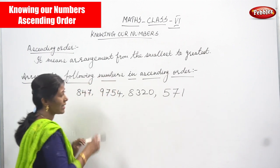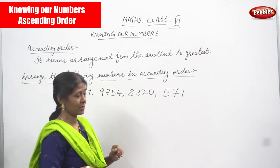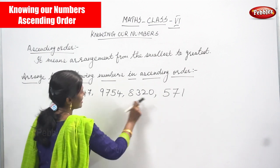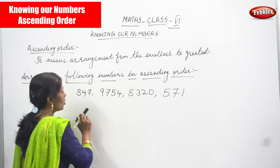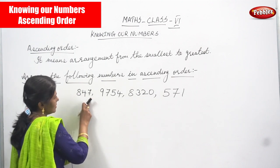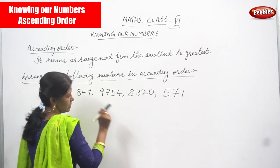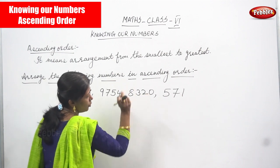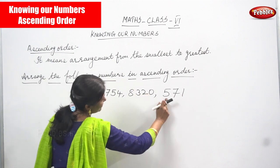We have to arrange the numbers from smallest to greatest. Before that, let's count the digits. The first number, 847, has 3 digits. The second number, 9754, has 4 digits. The third number, 8320, has 4 digits. And the last number, 571, is also 3 digits.